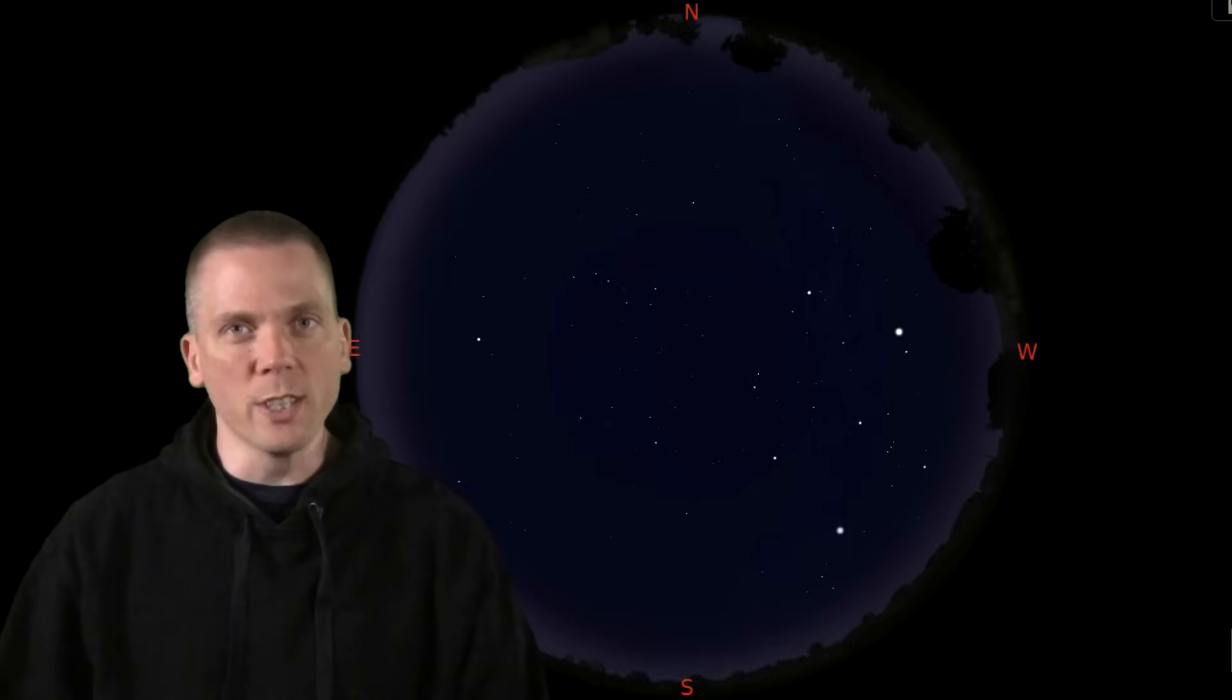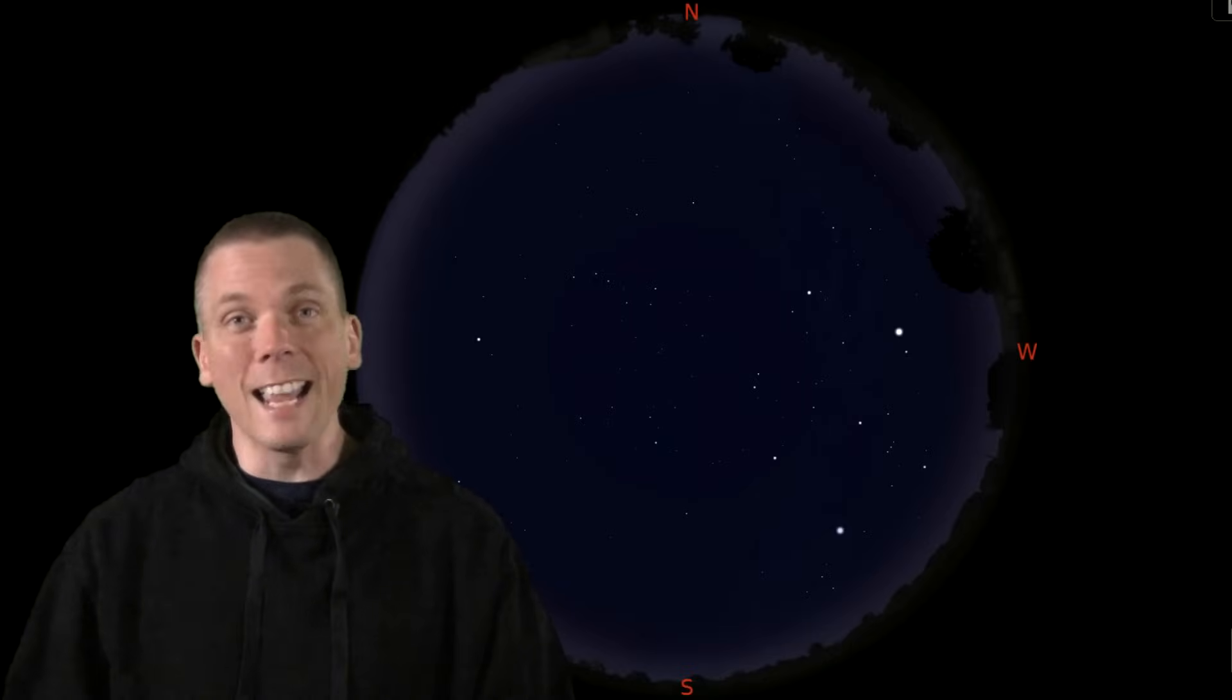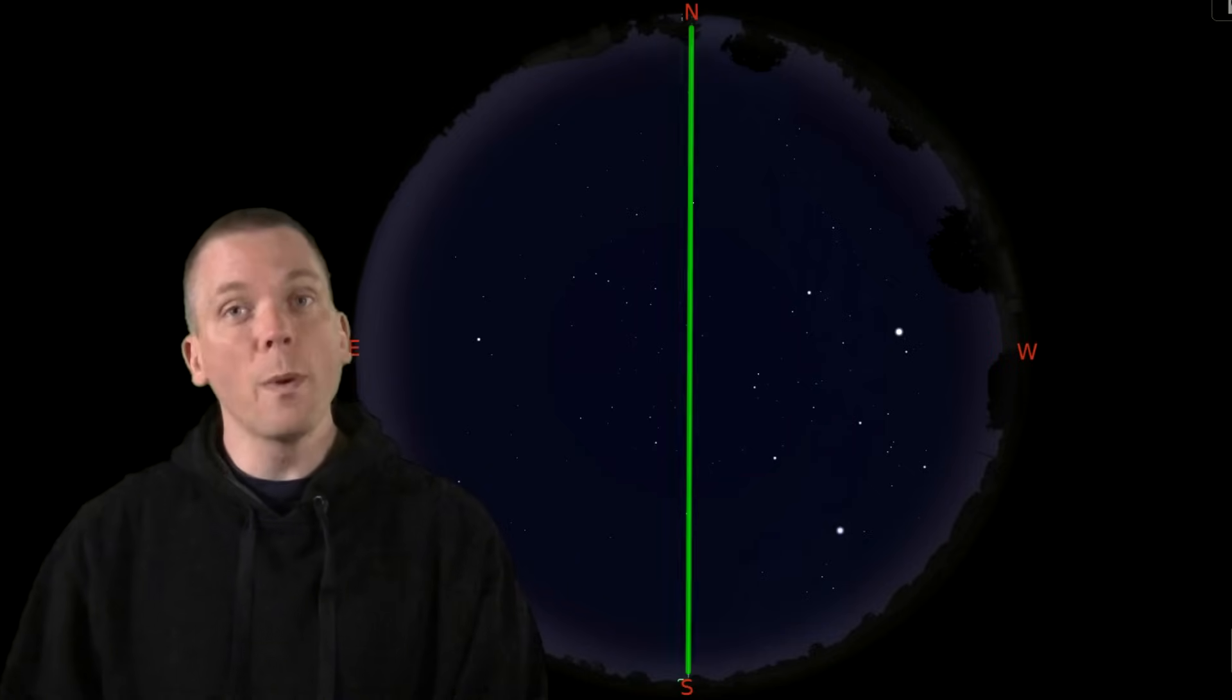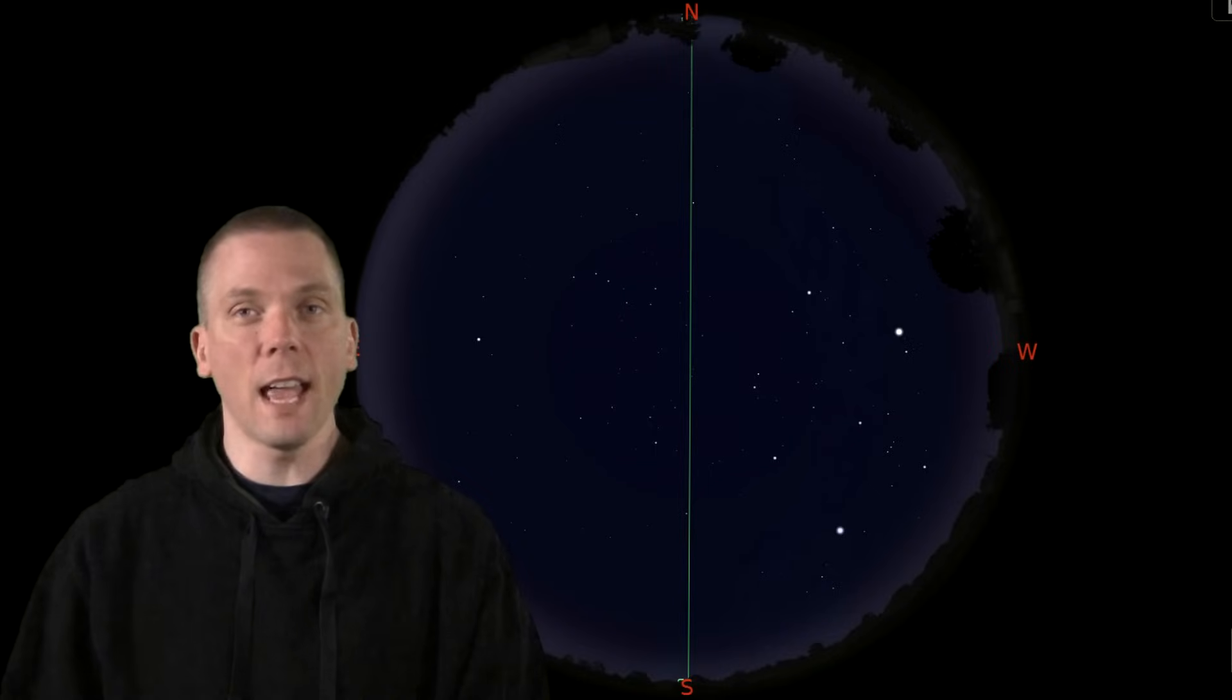Well, let's start with those cardinal directions again. If we split the sky exactly in half, from north to south, we would have a line bisecting those halves. That line is called the meridian.